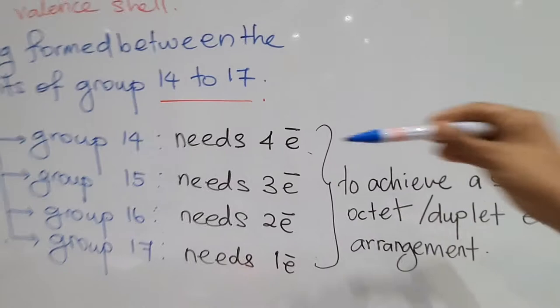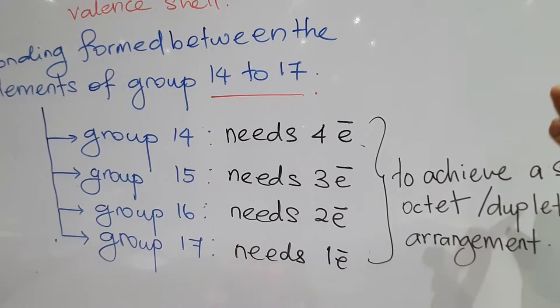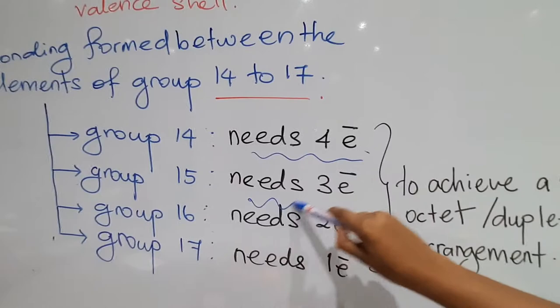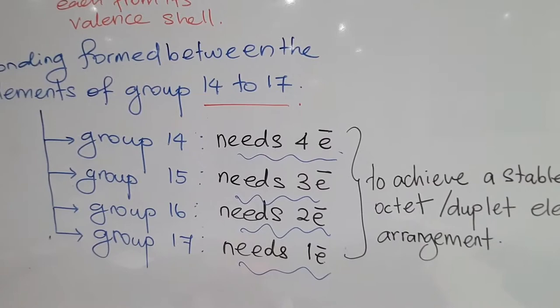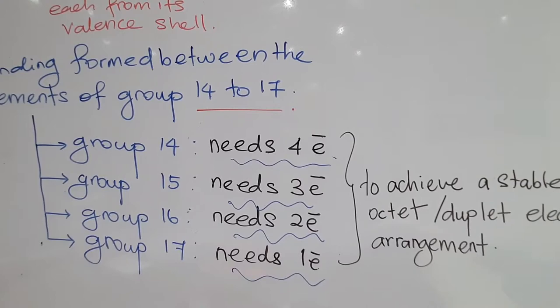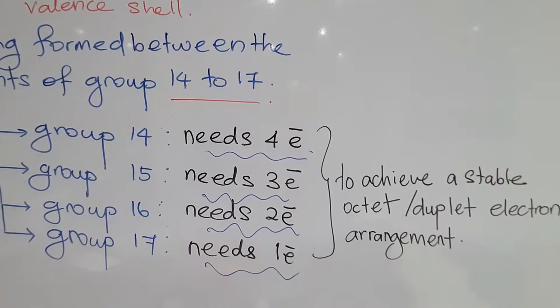When they need 4, 3, 2, or 1 electrons, how are they going to do the sharing? It's determined by the number of electrons they need — how many they need is how many they share. For example, if it's group 14 and they need 4, that means they need to share 4. Group 15 needs 3, so they need to share 3 valence electrons with other elements. How the bonding forms is determined by what the other elements contribute.